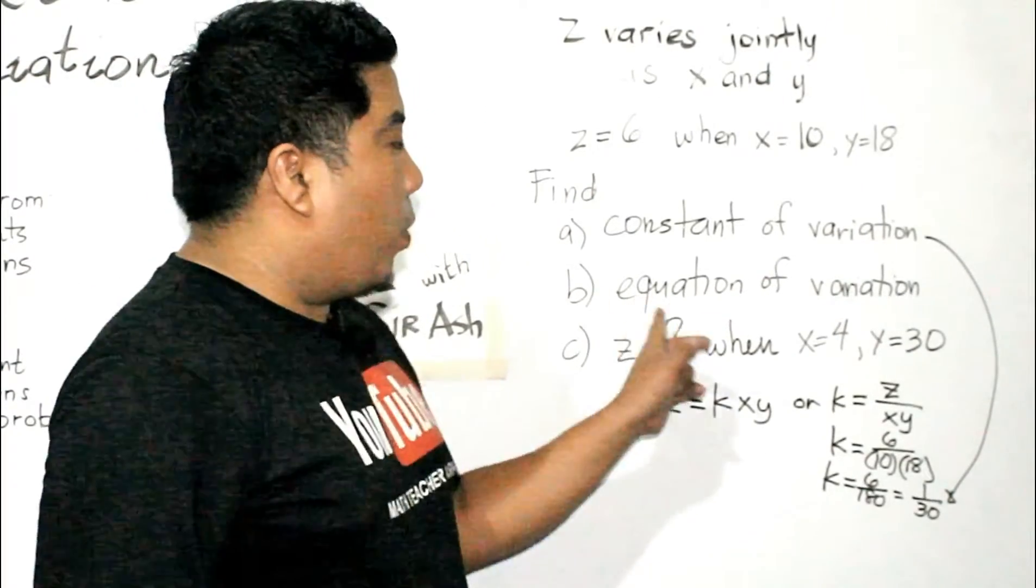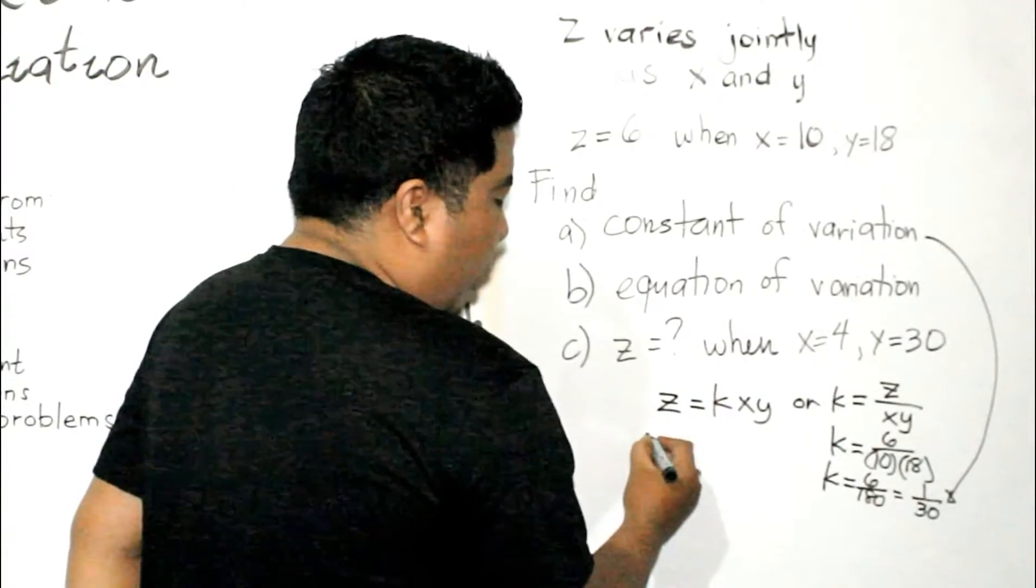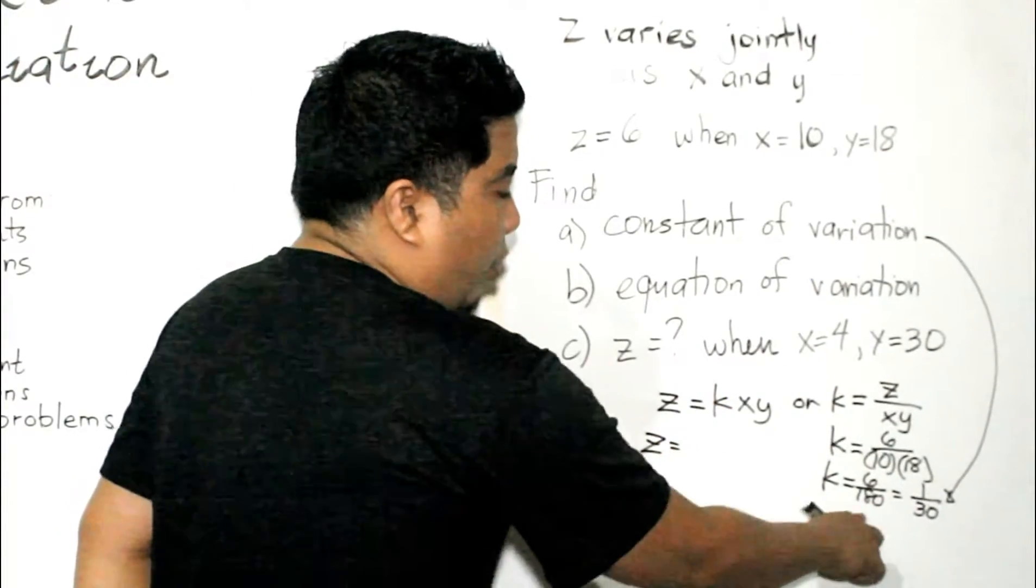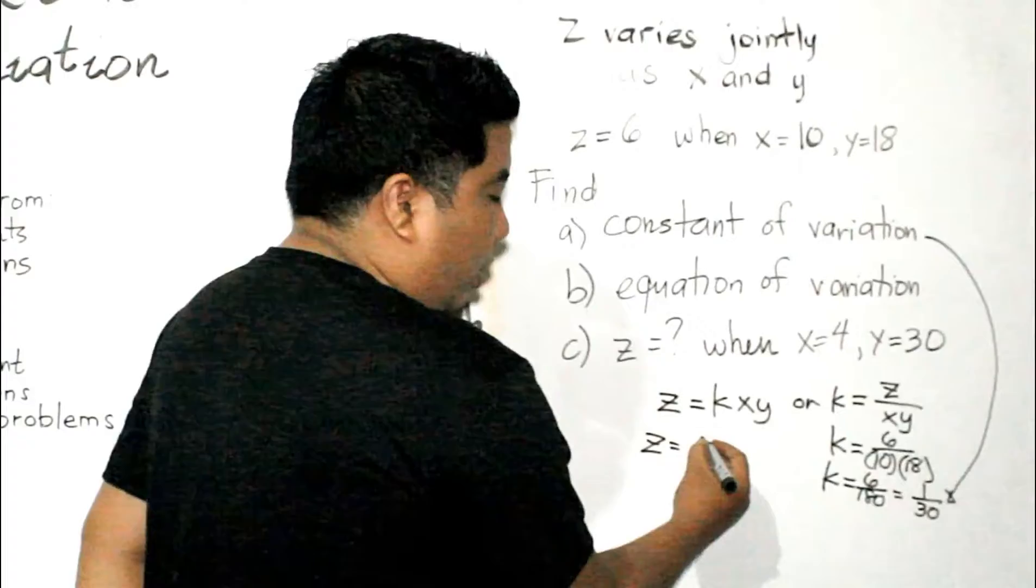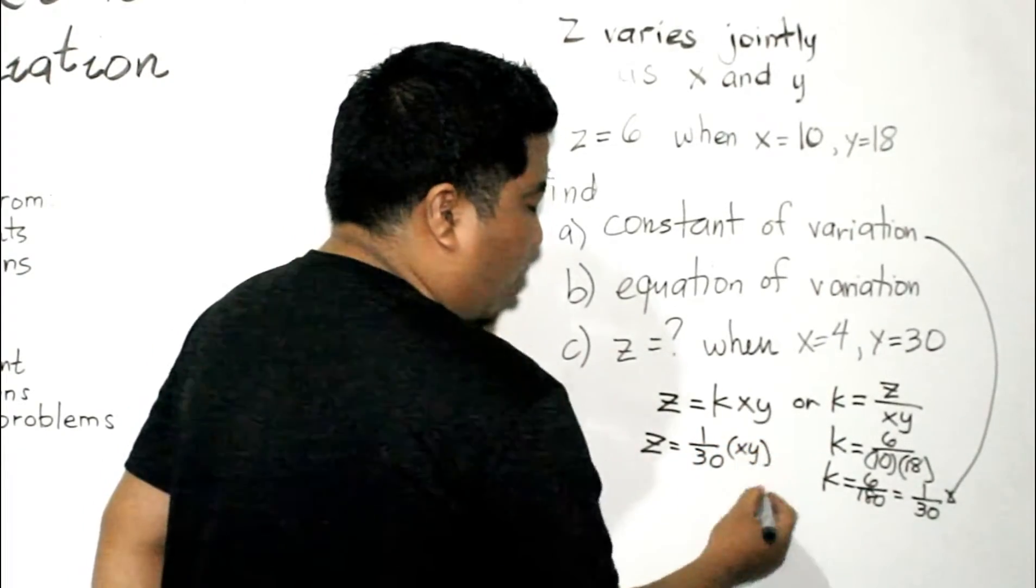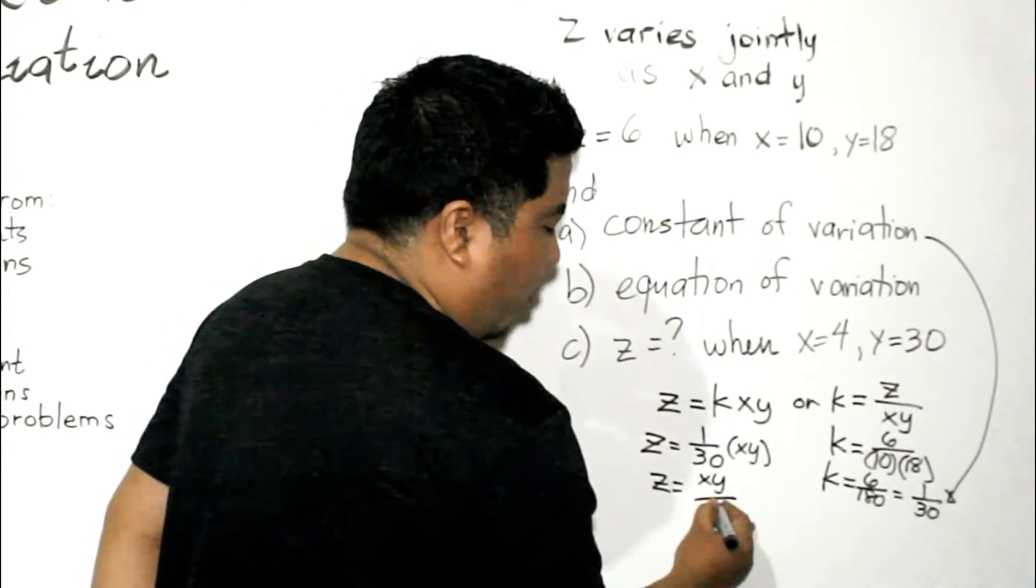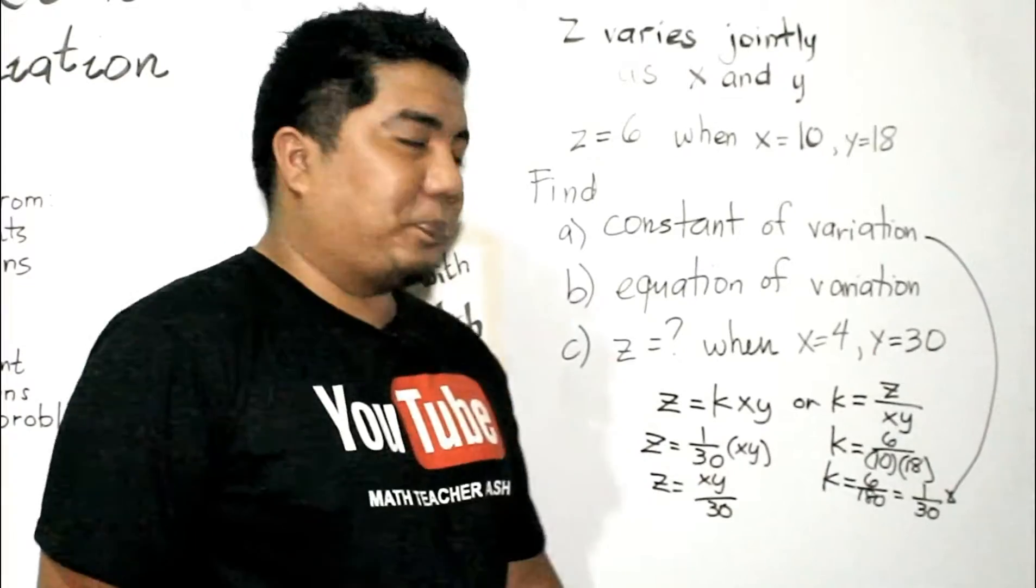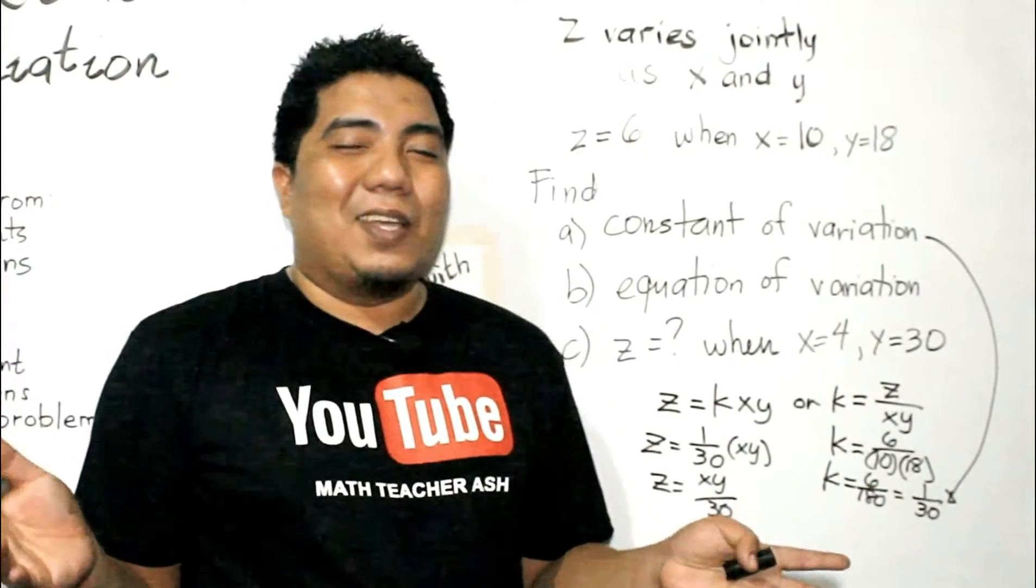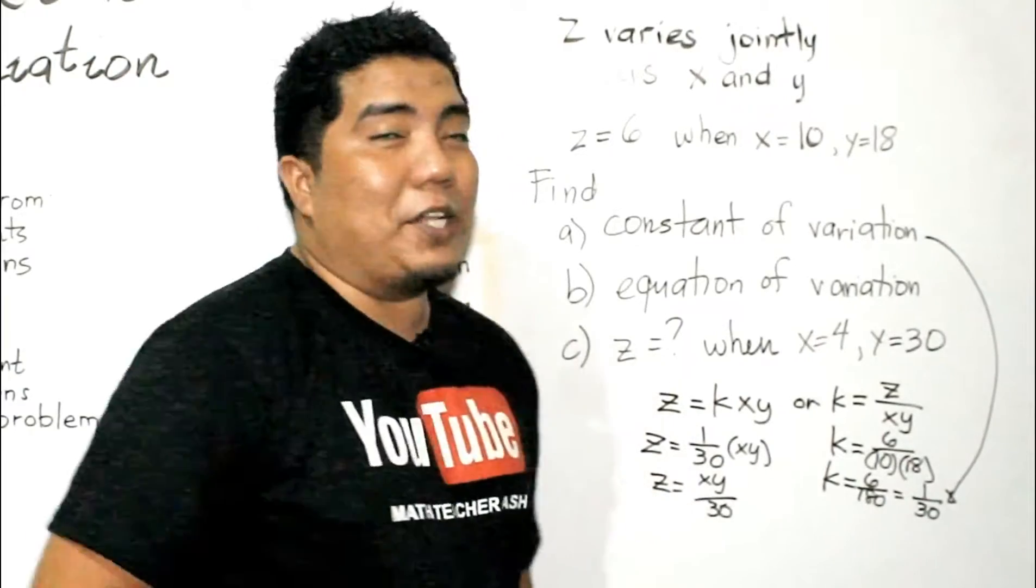Question is, what is the equation of variation? So, since this is your equation, what you need to do is to substitute your k to this equation and that will be 1/30 times x and y or you could just write it as x y over 30. Easy, right? So, it could be like this or it could be this one.